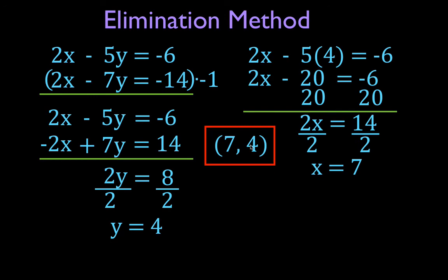That means these two values are the solutions for both equations. I didn't do the full written check for this problem, but substituting in: 2 times 7 is 14, minus 5 times 4 is minus 20, which equals minus 6 — correct. You can do the same thing for the other equation and you'll get minus 14, confirming this is the correct point for these two lines.